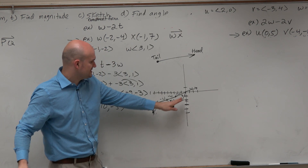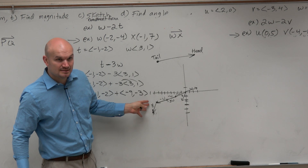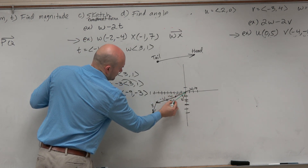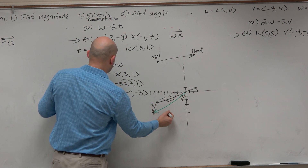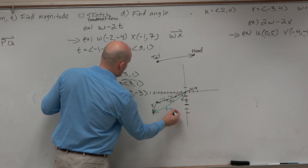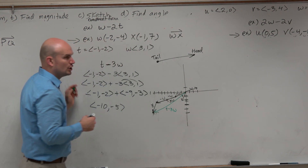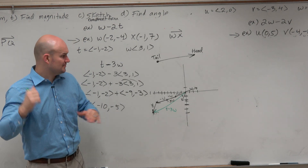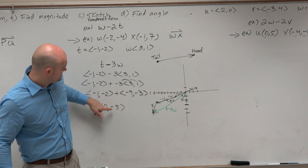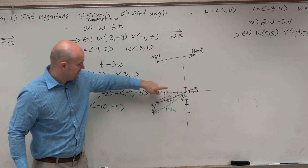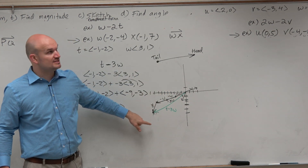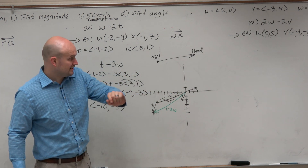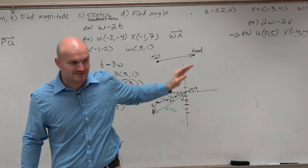Basically, all I'm doing is taking the t vector and transforming it at the end. So now to write the component form of this vector, you can see this one is t minus 3w. Sometimes we also just call it vector r, which is the resultant vector. You're starting at 0, 0, and then this vector ends at negative 10, negative 5. I want you to see how this vector got composed, which is basically just the sum of these two vectors. So take out your sheet of paper — we have three vectors I'd like you to go ahead and do.